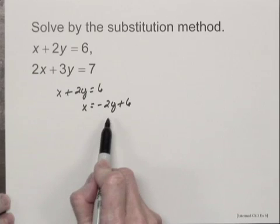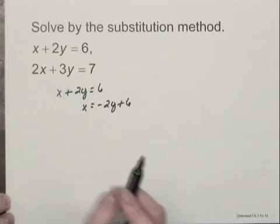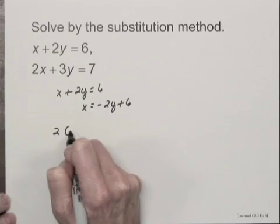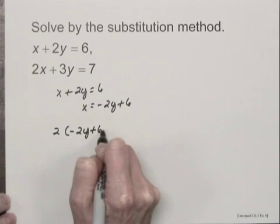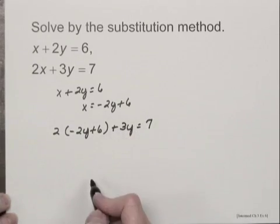Now I can substitute negative 2y plus 6 in the second equation and solve for y. So I'll have 2 times negative 2y plus 6 plus 3y equals 7.